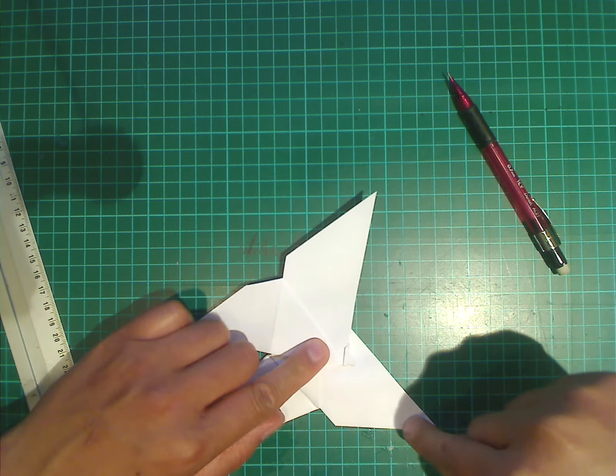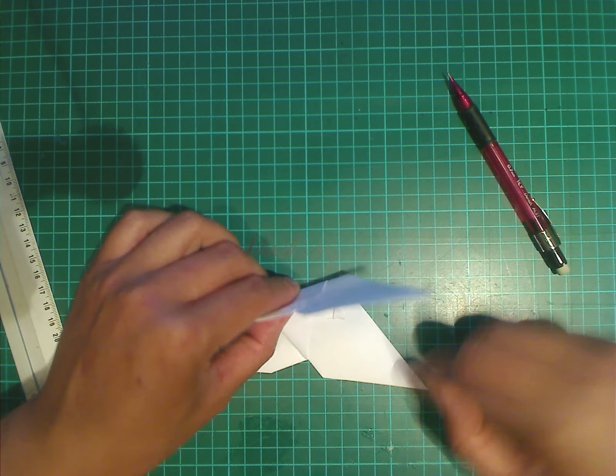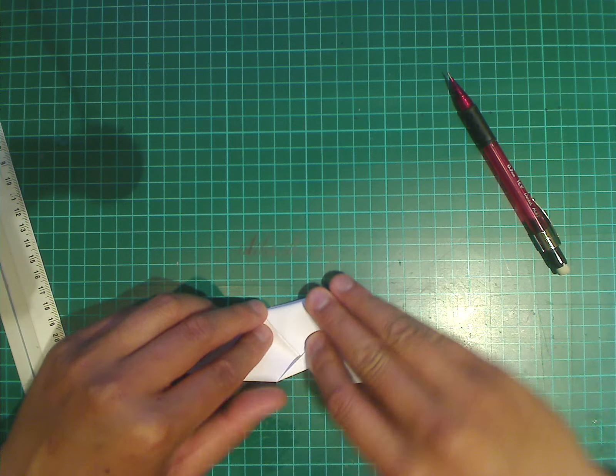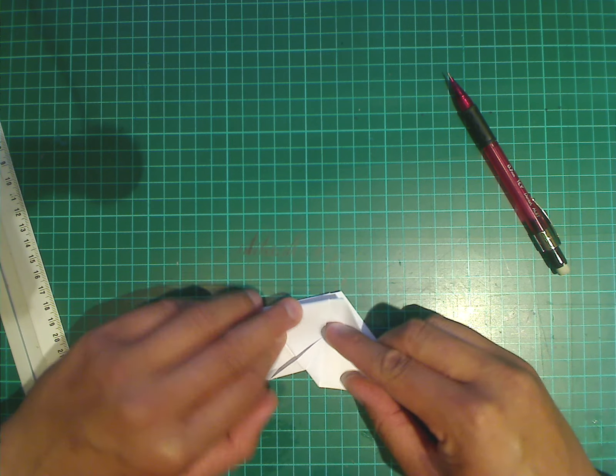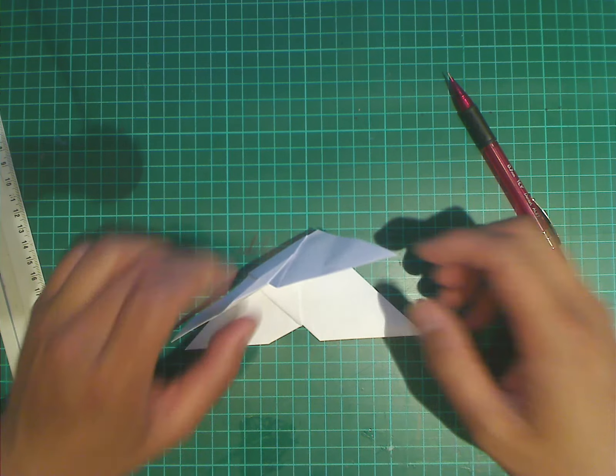And because you already folded this wing here, you can just use it as a guideline. You just fold this so it matches that wing. And if you open it up, that completes your butterfly.